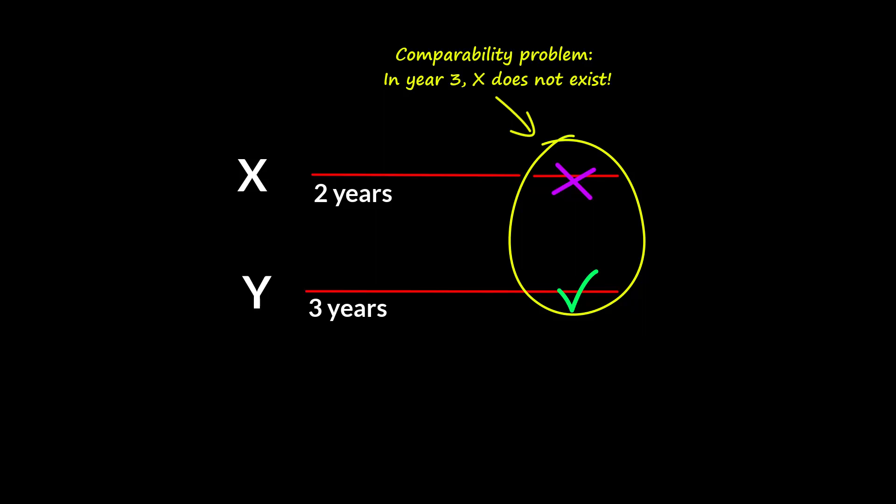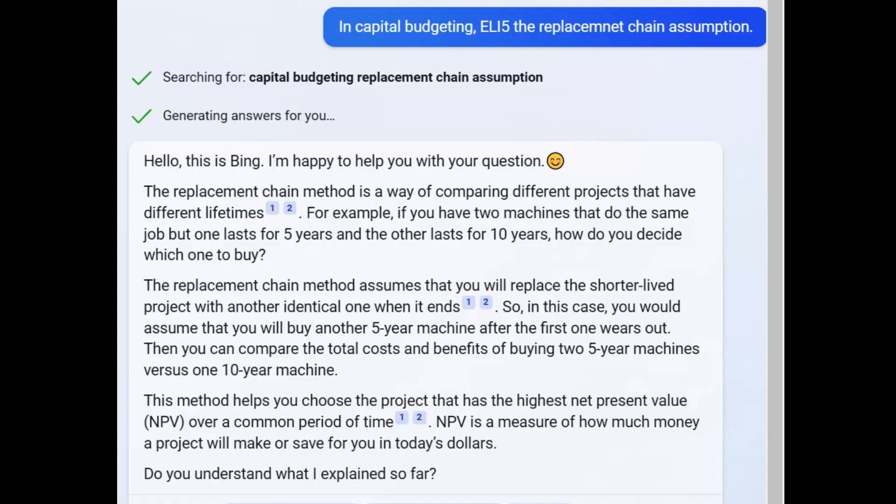Such situations are a problem when there is expected to be a continuous replacement chain for the projects. This means that the firm will need to replace each project as it ends with an identical one. If, for example, the firm accepts two-year Project X, it will need to start a new Project X at the end of year 2, another one at the end of year 4, and so on.